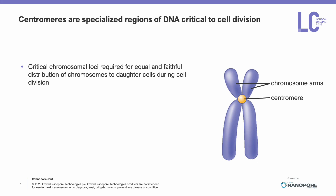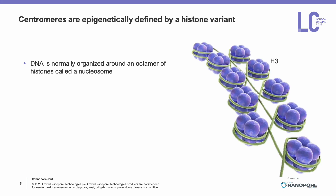Centromeres are specialized regions of DNA that are really important to cell division, because they're the site of kinetochore formation and microtubule attachment, which allows genetic information to be passed on equally during cell division. Often repetitive, centromeres are unique chromosomal loci because they're not defined by a specific sequence,